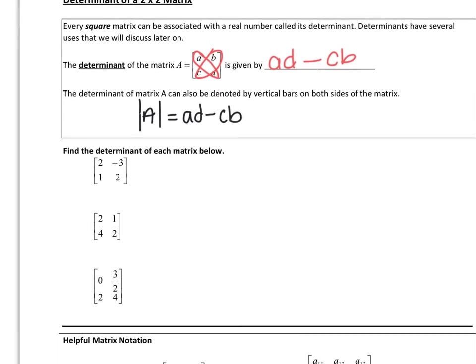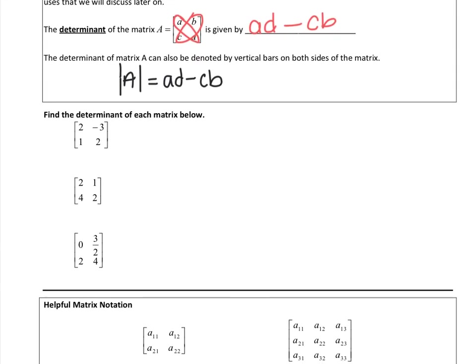Given each of the three matrices below, let's find the determinant. The determinant is this diagonal minus this diagonal — we take the product of 2 times 2, which gives us 4, minus 1 times negative 3. So 4 plus 3 is 7.